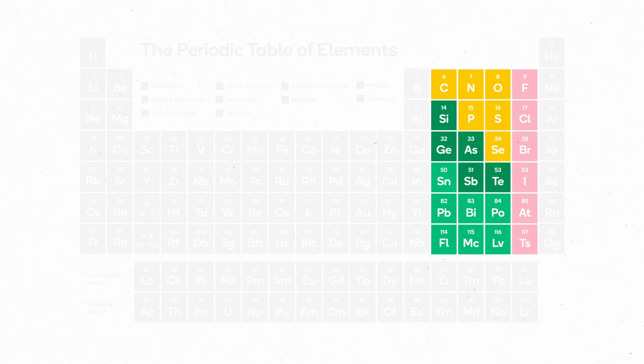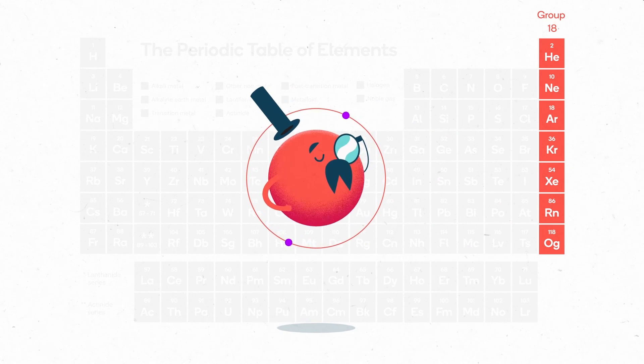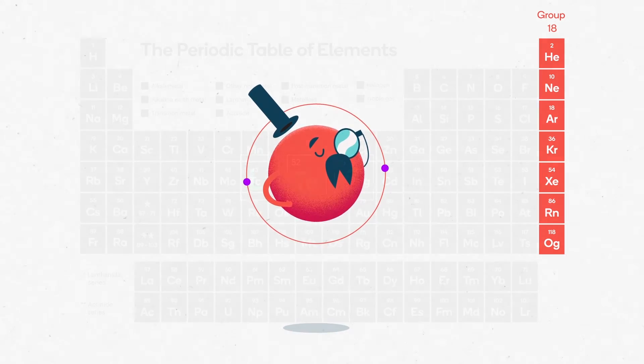On the right, elements gain electrons more easily as atomic radius decreases, so reactivity increases to the right and upwards. And the noble gases in group 18 typically don't react at all.